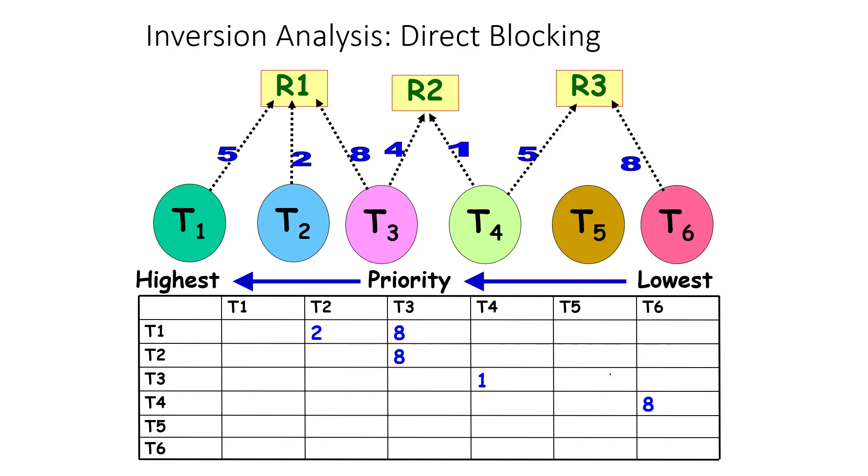Let us now look at some analysis. Assume tasks T1, T2, and T3. In this case, T1 has highest priority, T2 second highest, T3 third highest, and T6 is the last, sixth highest. These are their durations of execution: 5, 2, 8, 4, 1, 5, 8 respectively.